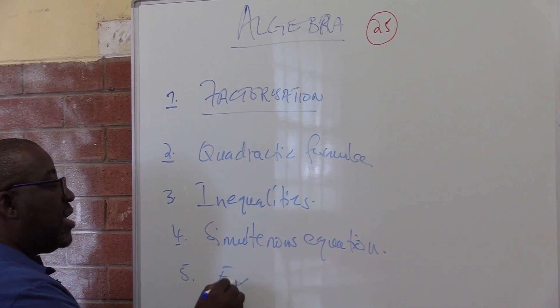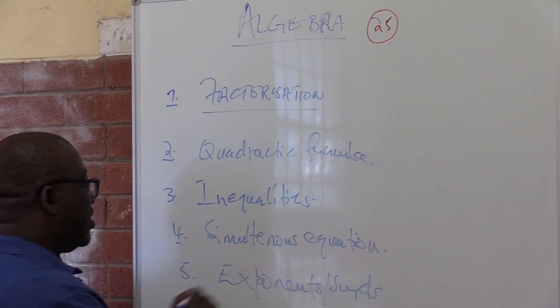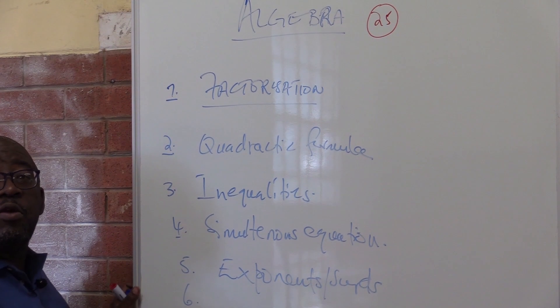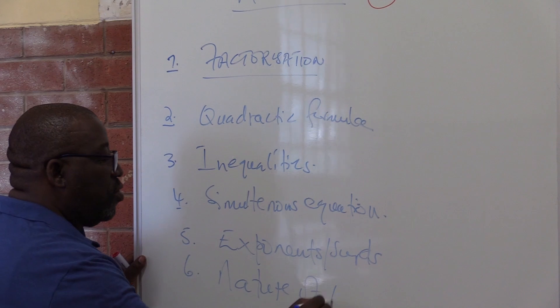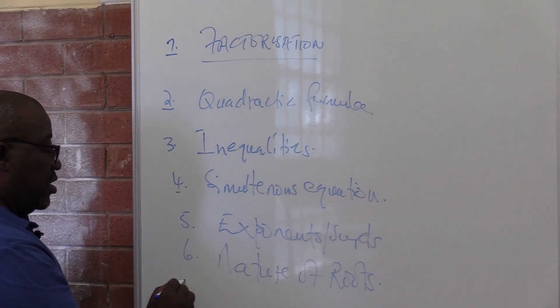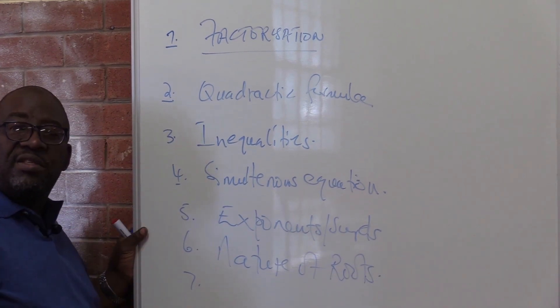After simultaneous equations, of course you must be able to do exponents and surds. After exponents and surds, the sixth one will be your nature of roots. We'll be touching on all these sub-topics today.